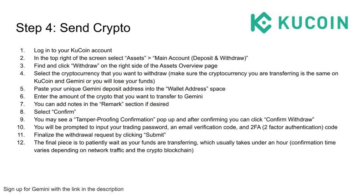It's time to finish off the transfer over in the KuCoin platform. After logging into your account, navigate to Assets, then select Main Account and Deposit & Withdraw. Click Withdraw on the right side of the assets page. After choosing the crypto that you want to transfer, you will simply paste in the Gemini wallet address you copied earlier. Enter the amount you wish to transfer and add any notes if you'd like. After confirming the details, you can tap on the Confirm button.